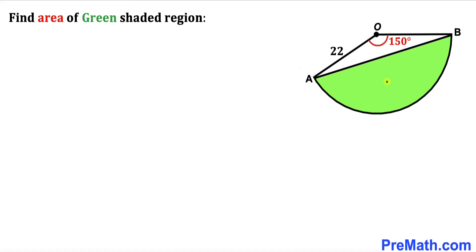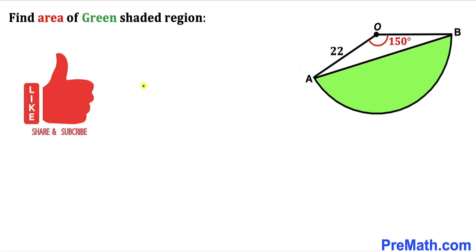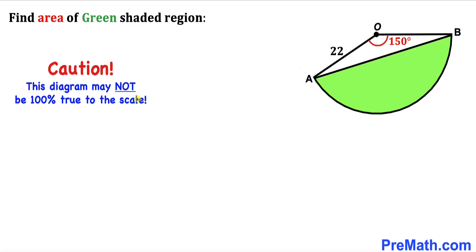Welcome to PreMath. In this video we have got this sector AOB, as you can see in this diagram, along with this triangle AOB, such that this angle AOB is 150 degrees and the radius of this sector is 22 units. Our task is to calculate the area of this green shaded region. Please don't forget to give a thumbs up and subscribe. Keep in mind that this figure may not be 100% true to scale.